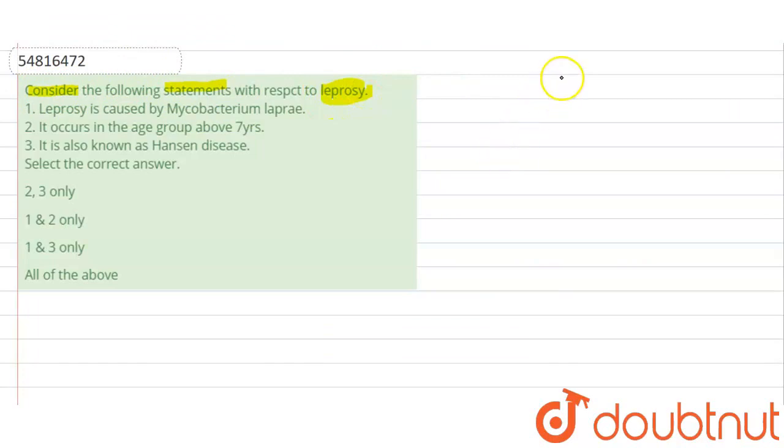So first of all, I will explain. Leprosy is also known as Hansen disease. It is an infection caused by a slow-growing bacteria, and that bacteria is known as mycobacterium.